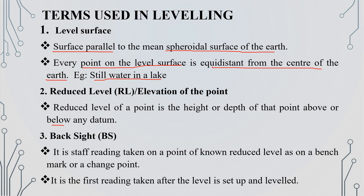If you have a depth level below a point, that depth level is a reduced level. The next term is Backsight. Backsight is the first staff reading taken on a point of known reduced level.